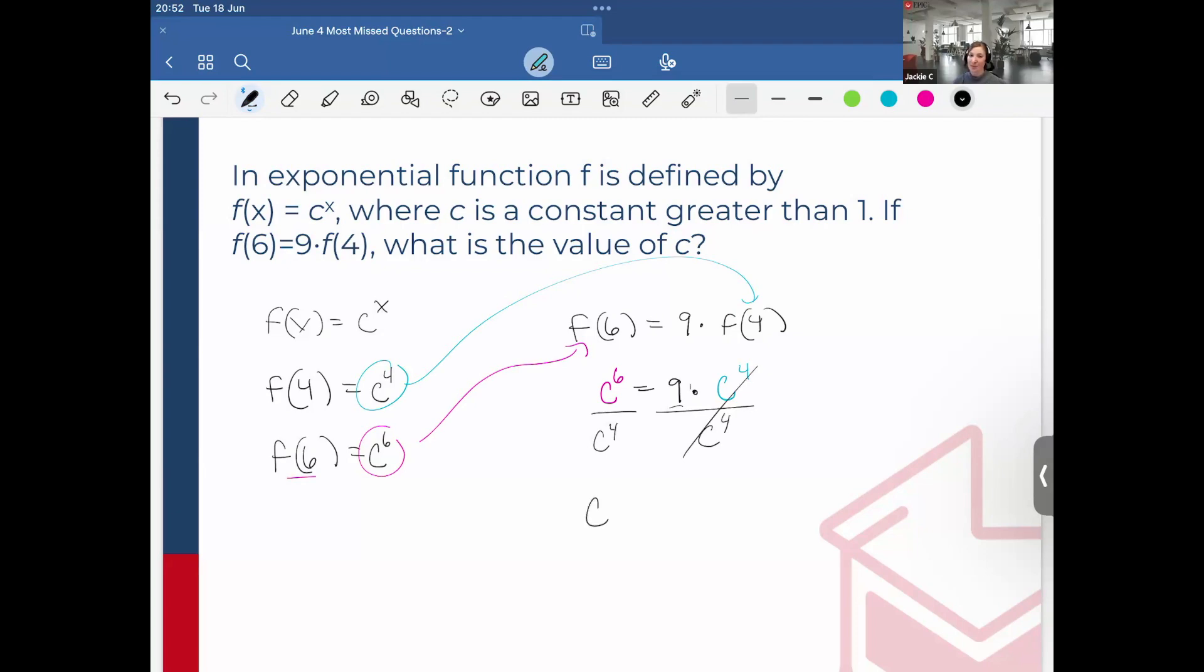And then I'm going to divide each side by c to the fourth. Remember, we're dividing with the same base, so subtract the exponents. This will give me c squared is equal to 9. Finally, take the square root of each side, and this will give me the value of c, which is three. So a great exponential function.